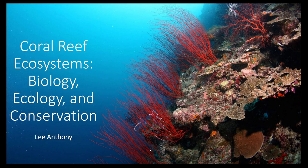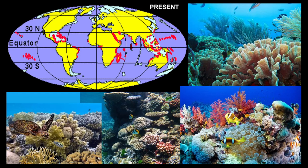Coral reefs occur between 30 degrees north and 30 degrees south latitude, as shown on the map. They generally don't occur outside of that range due to water temperature not dropping below 64 degrees. Coral reefs are important to a large portion of life on Earth — it's widely held that they hold an estimated 25% of all marine species, sustaining and preserving marine ecosystems, providing coastal protection against storms, habitat for commercial fisheries, and economic benefits from recreational activities like diving and tourism.